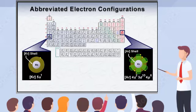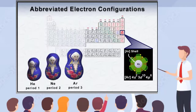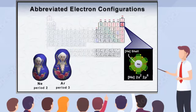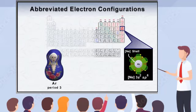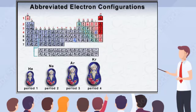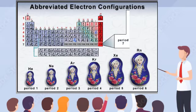This filled or closed shell concept can be visualized as something similar to Russian nesting dolls, where the smallest doll would represent the noble gas helium in the first period. The next period would include the smaller doll plus a larger doll, representing the next higher energy level, and so on. Relating this concept to the periodic table, there could be seven different dolls, corresponding to the seven periods and energy levels.